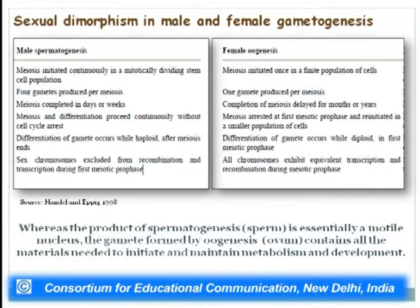Whereas the product of spermatogenesis — the sperm — is essentially a motile nucleus, the ovum contains all the materials needed to initiate and maintain metabolism and development. The egg accumulates proteins, RNAs, and other materials during the growth phase to support embryogenesis until it can use external nutritive material. The role of the sperm is only to bring the paternal chromosomes to the egg, forming a diploid cell upon fertilization.